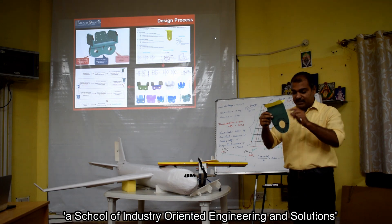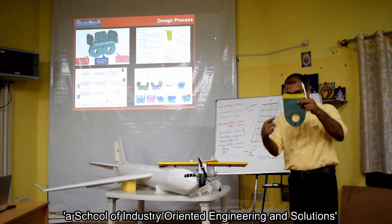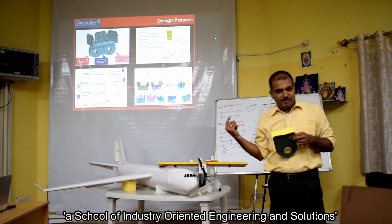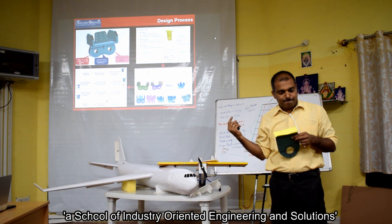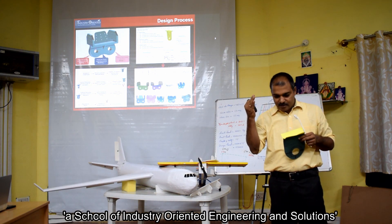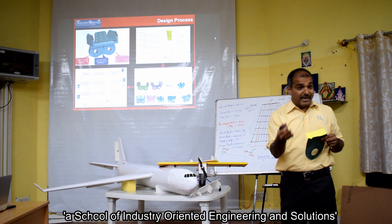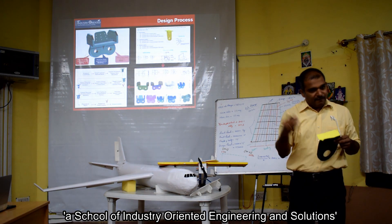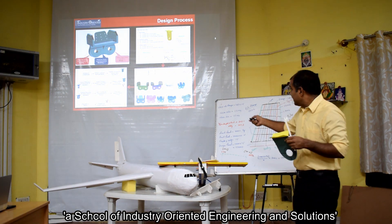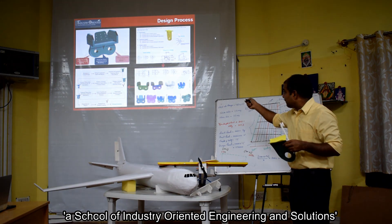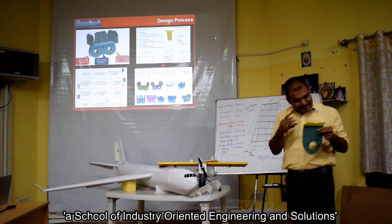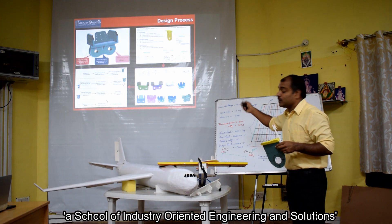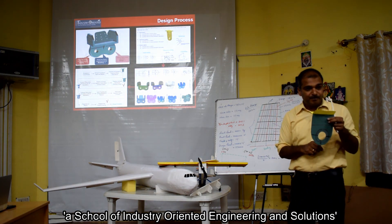Oblique loading is out-of-plane loading, but a combination of X and Y. Similarly, in our problem - what we discussed in the beginning - if the shear force and the bending moment act together, they simultaneously act together, we need to check for combined failure. Here, axial loading and transverse loading will be acting simultaneously - what is going to happen is oblique loading. We need to again check for it.